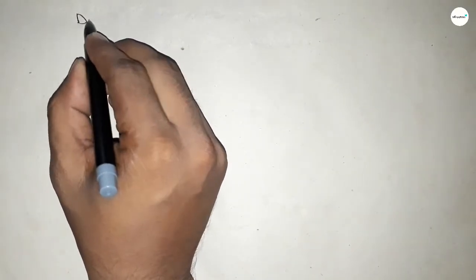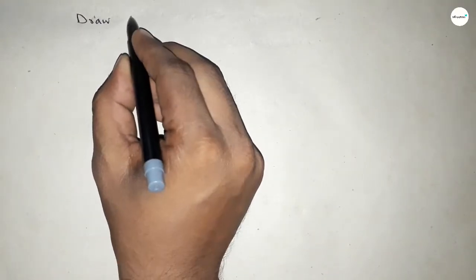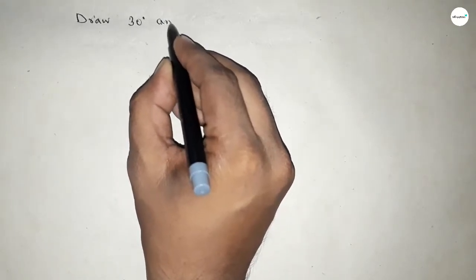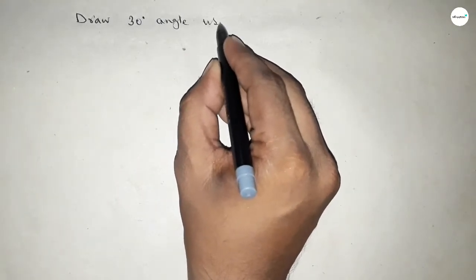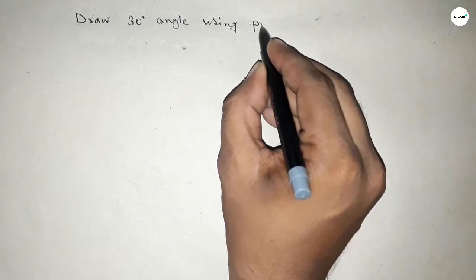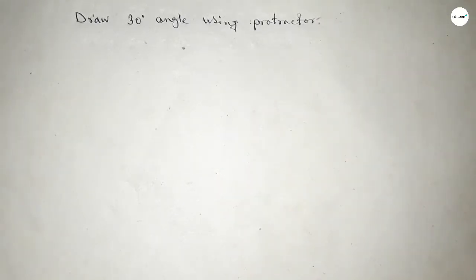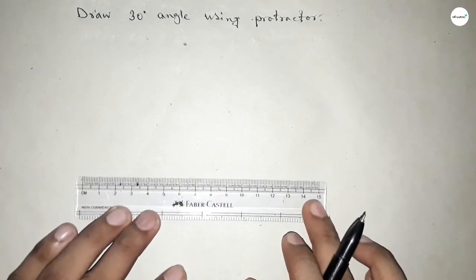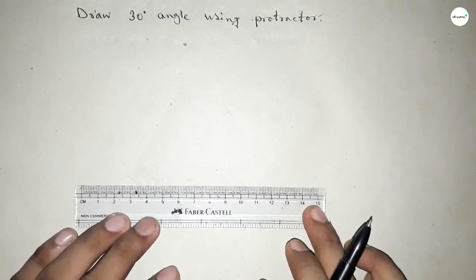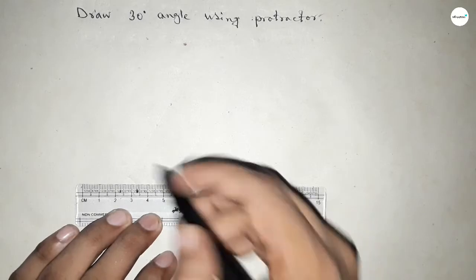Hi everyone, welcome to SSR classes. Today in this video we have to draw a 30 degree angle using a protractor. So let's start the video. First of all, drawing a line of any length here.